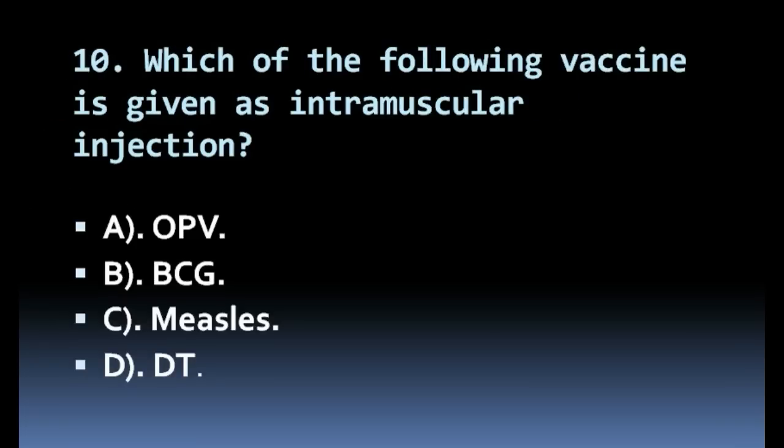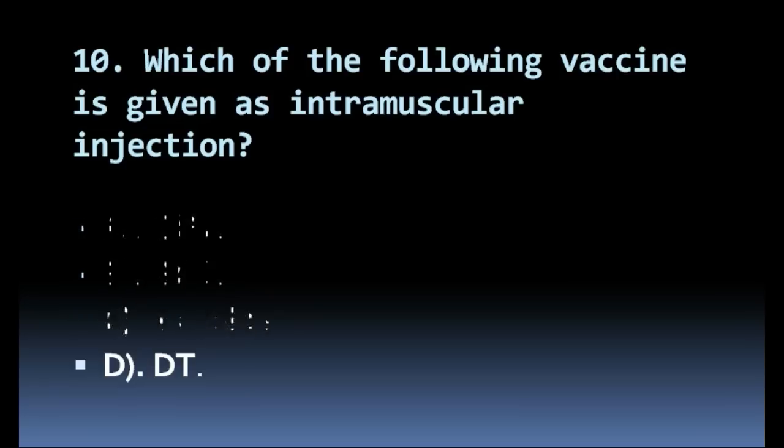Which of the following vaccines is given as an intramuscular injection? Options: OPV, BCG, measles, DT. Correct answer: DT.